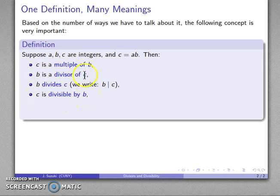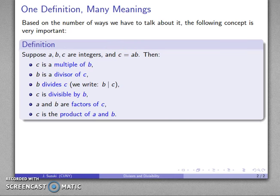Note the inversion of our clauses here. b divides c is the active form. Passive form: c is divisible by b. And we could also say that a and b both are factors of c. And finally, we could say that c is the product of a and b.